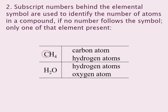Here we have C all by itself, so we have one carbon atom. Now we have H with a 4 following it, which means we have 4 hydrogen atoms. In the molecule of water, we have H2O — that's H followed by a 2, so that means we have 2 hydrogens. And then O, not preceded by a number, which means we have 1 oxygen.